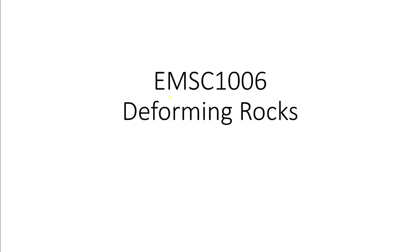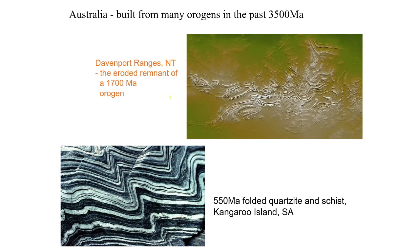Okay folks, now we're going to talk about deforming rocks, obviously an important process when we think about rocks on continents, particularly building continents and building mountains. As you can see here, Australia was built by assembling numerous different orogens.